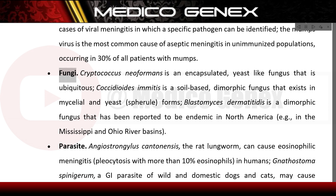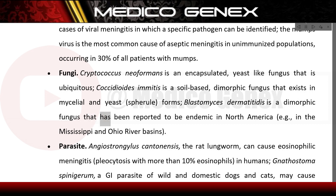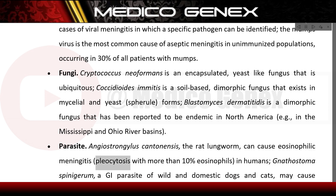Fungal causes include Cryptococcus neoformans, an encapsulated yeast-like fungus; Coccidioides immitis, a soil-based dimorphic fungus; and Blastomyces dermatitidis, a dimorphic fungus endemic in North America, such as in the Mississippi and Ohio River basins. Parasitic causes include Angiostrongylus cantonensis, the rat lungworm, which can cause eosinophilic meningitis, and Gnathostoma spinigerum, a GI parasite of dogs and cats, which may cause eosinophilic meningoencephalitis.